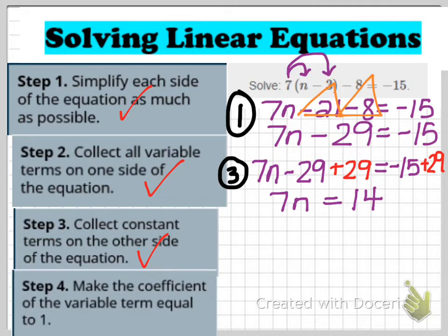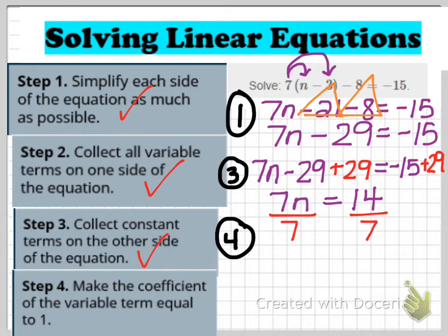Step 4 is my second-to-last step. I need to make the coefficient of the variable term equal to 1. Right now the coefficient is 7, and to turn 7 into 1, I divide by 7. So I divide both sides of the equation by 7, which leaves me with n — the same as 1n — equals 2.